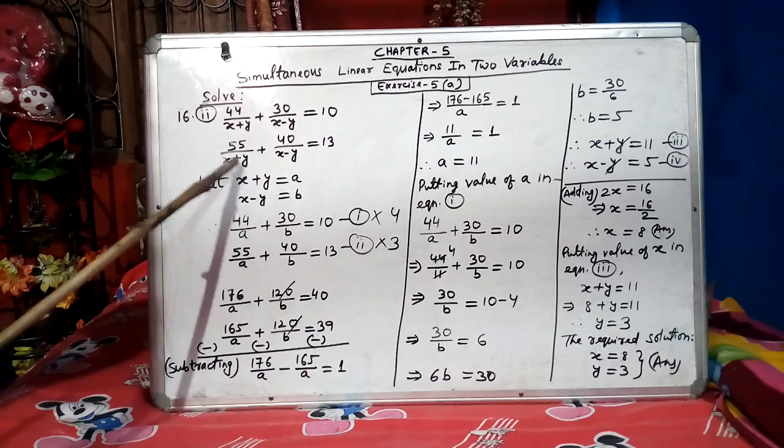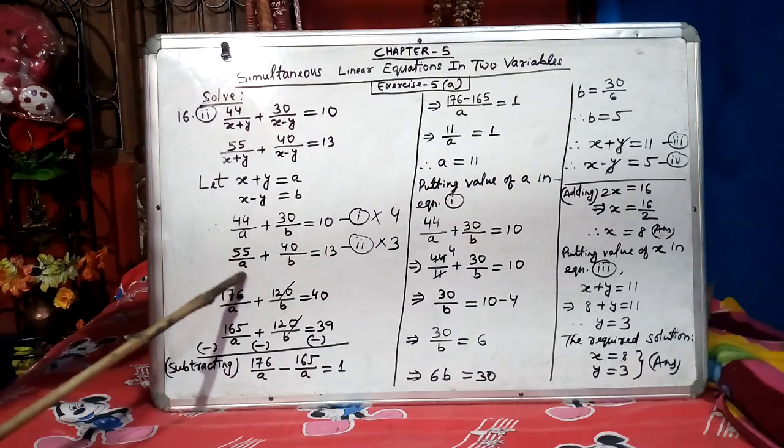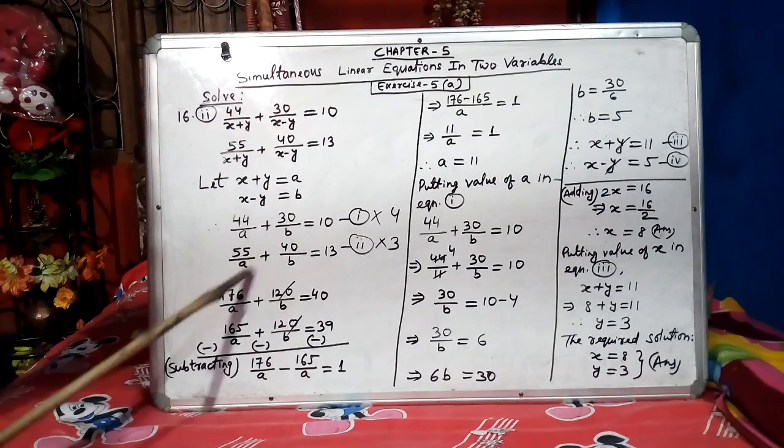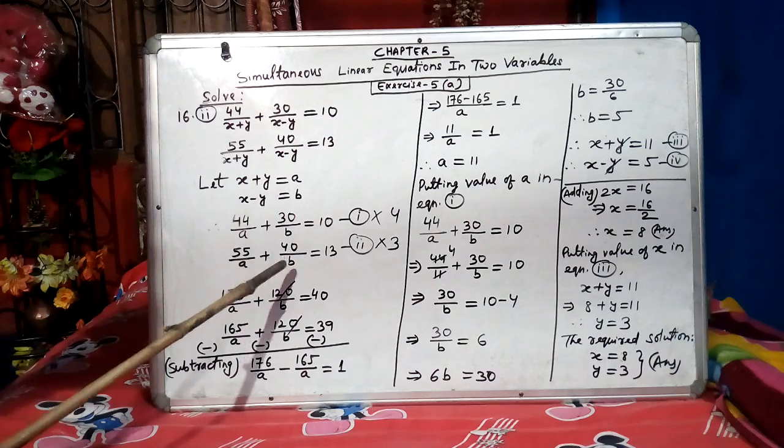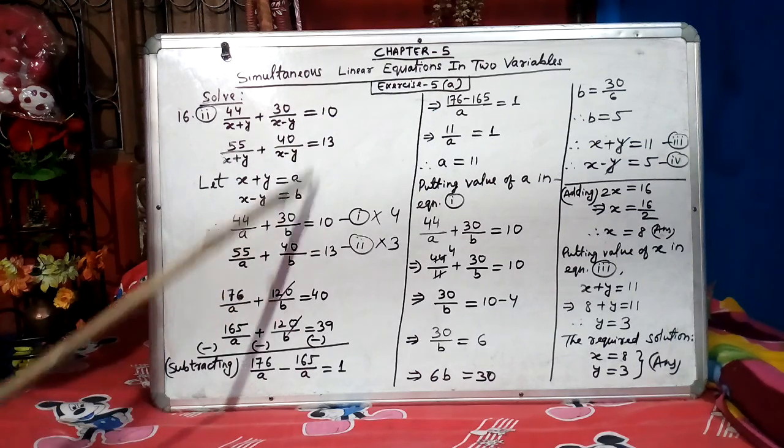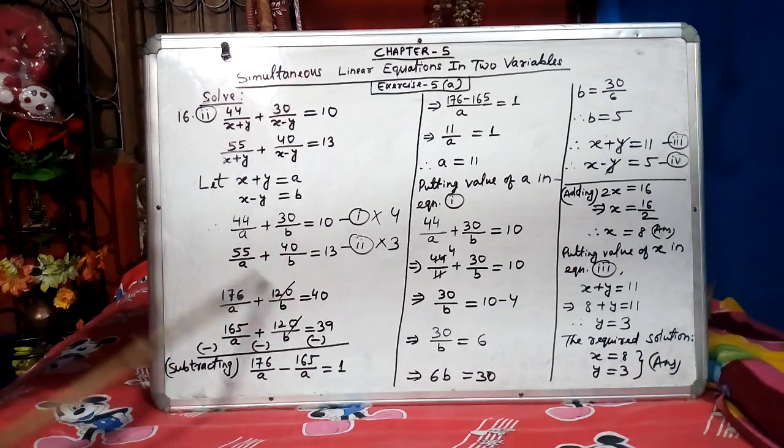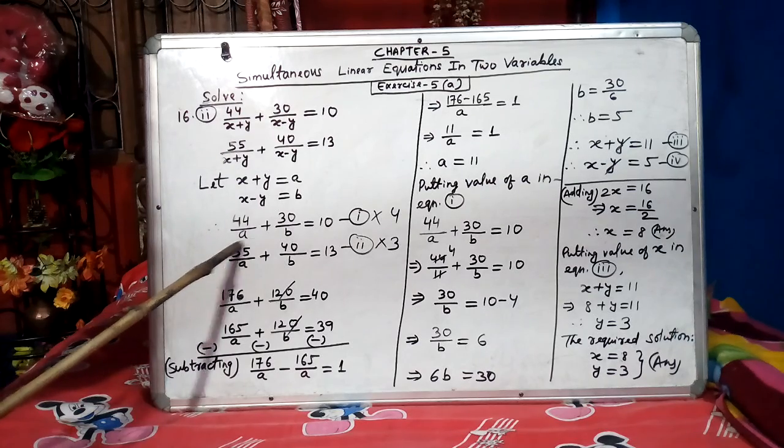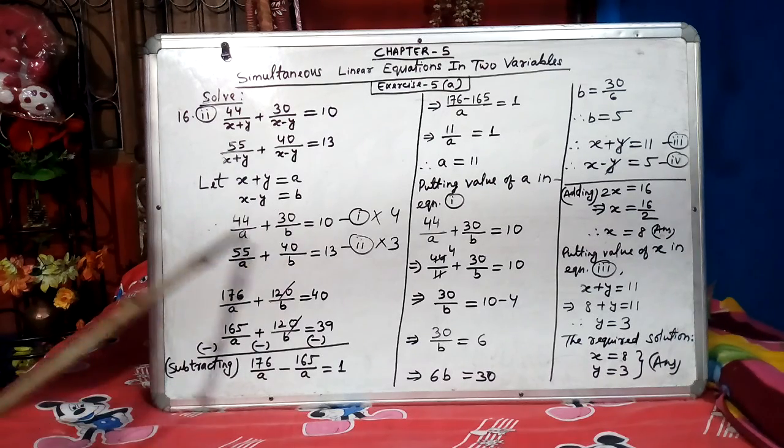Now you can see, 44 by a, that means x plus y is a, plus 30 by b, because x minus y is b, equal to 10. Now 55 by a, because x plus y is a, plus 40 by b, because x minus y is b, equal to 13. So same equation, but x plus y became a, x minus y became b.